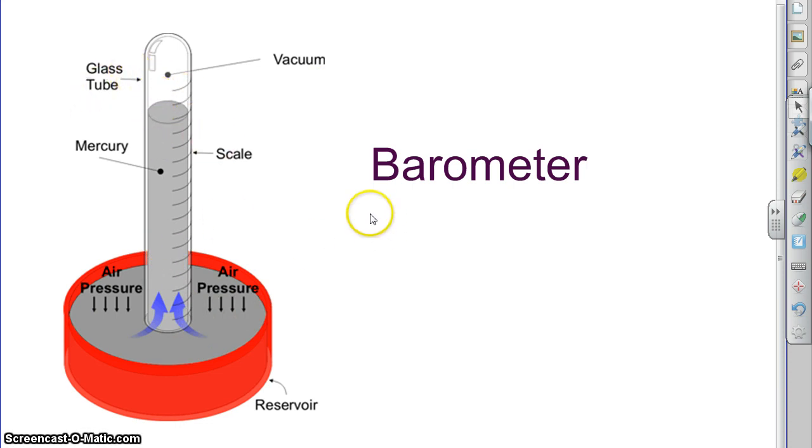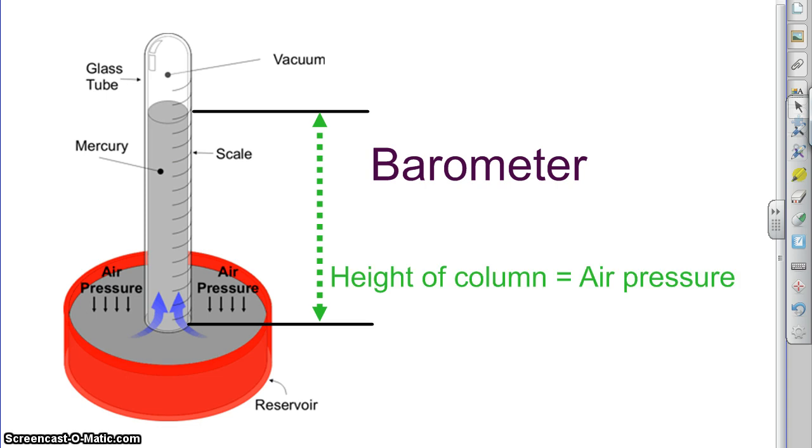You can actually measure the air pressure simply by finding out how tall the column is. If you measure the top of the column and the top of the reservoir, that difference is going to be some length, and that height is the air pressure.